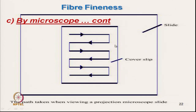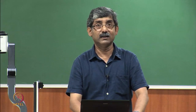The slide is then traversed in a zigzag fashion so that fibre diameter readings are taken from different positions, covering the maximum number of fibres randomly. This ensures a representative measurement. We will continue with more measurement techniques of fibre fineness in the next class.